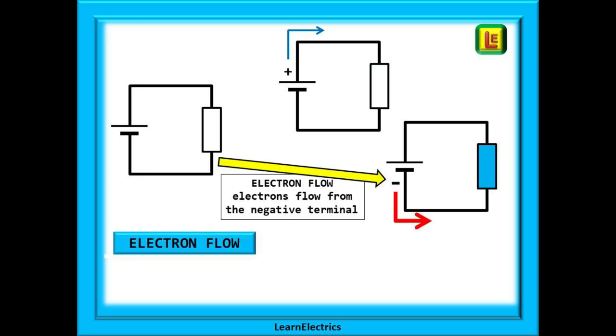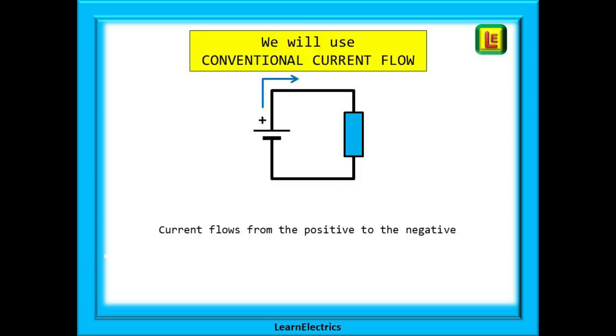However we now know that it is these little things called electrons that move around a circuit and they move in the opposite direction. They actually flow from the negative to the positive and this is called electron flow. We however will use conventional current flow along with most of the engineering world. We will look at current as flowing from the positive to the negative. It works just as well. It is the accepted way and everybody understands it.